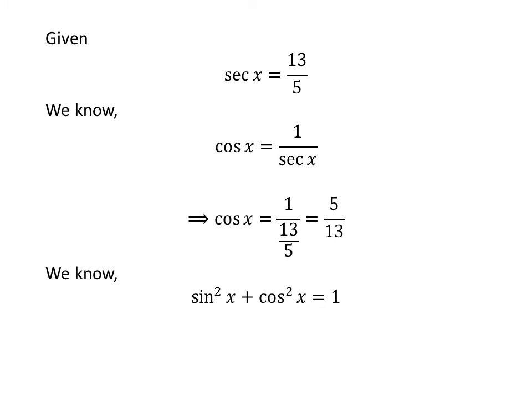We know the famous trigonometry identity: square of sine of x plus square of cosine of x is equal to 1. Plugging the value of cosine of x in the above identity gives us square of sine of x plus square of 5 upon 13 is equal to 1.